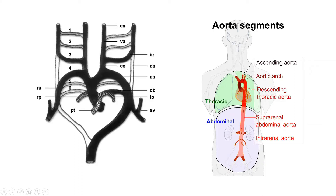This is the pulmonary trunk, and this is the right pulmonary artery, and this is the left pulmonary artery. This is the artery which connects the pulmonary artery and the aorta — this is the ductus arteriosus. At birth, the ductus arteriosus closes; more accurately, it closes after four days of birth.